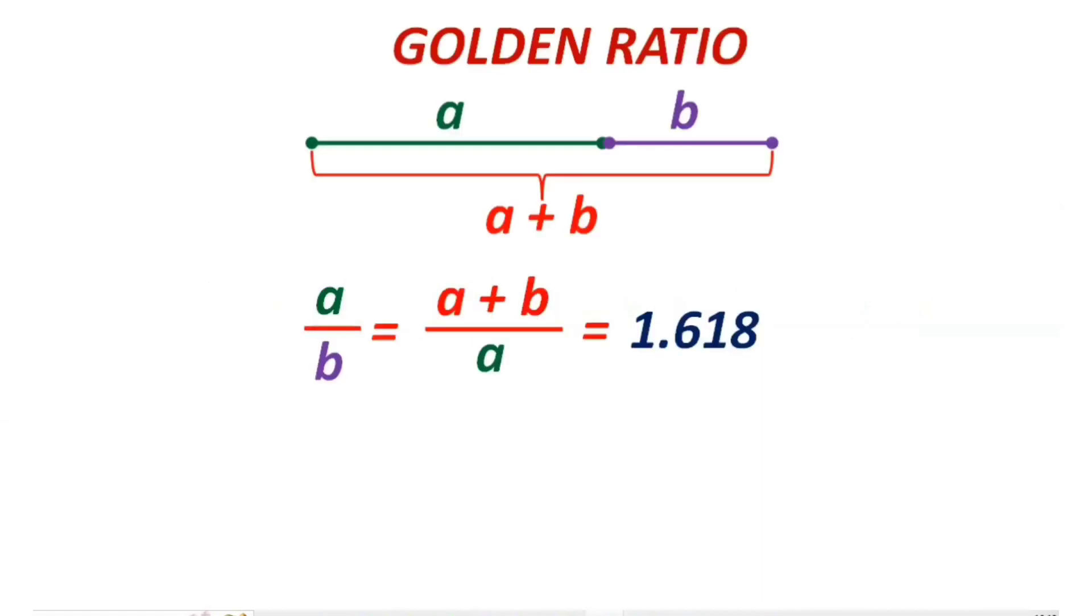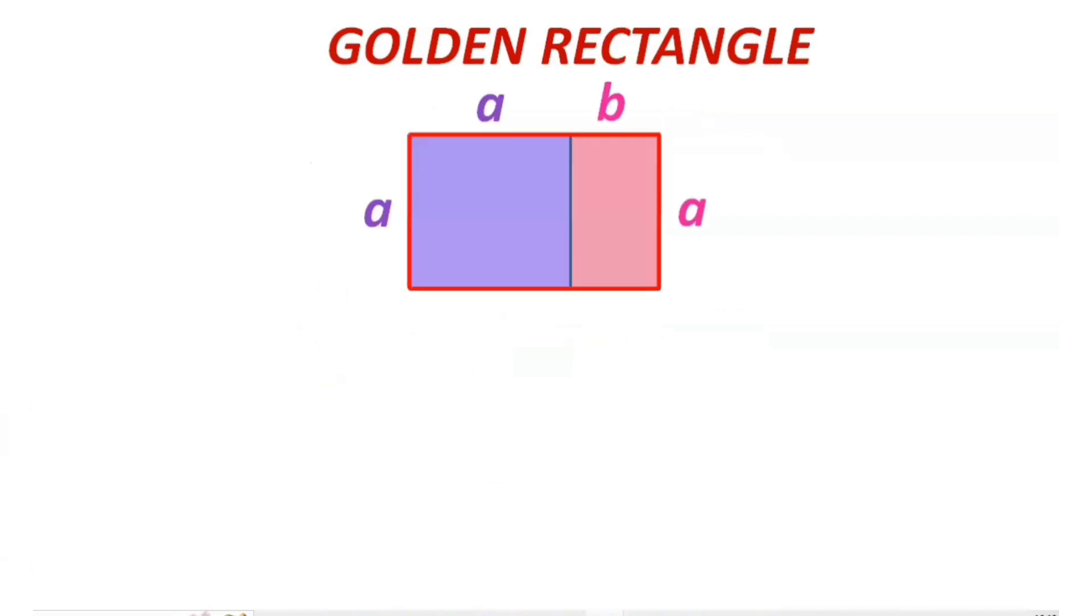Hello everyone, today let us learn what is a golden rectangle. In my previous videos we have learned what is a golden ratio and how it is related to Fibonacci sequence. In ancient Greece, artists and architects believed that there was a particular rectangular shape that looked very pleasing to the eye.